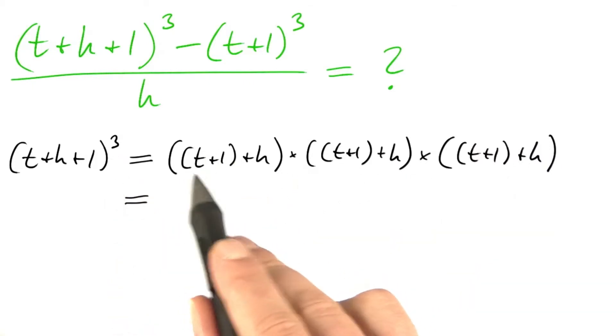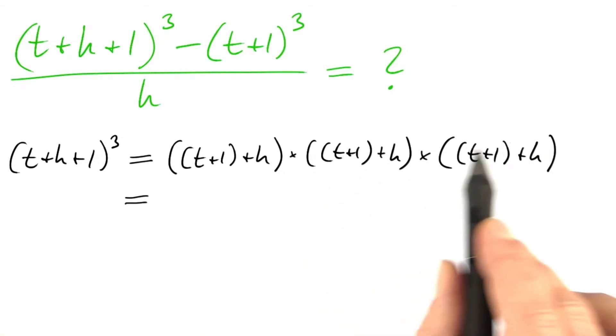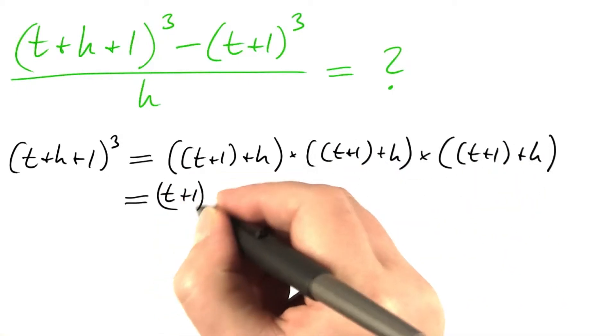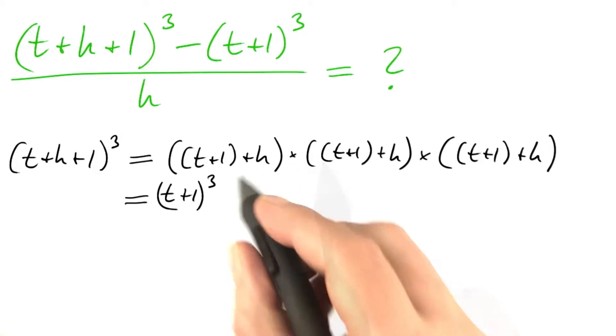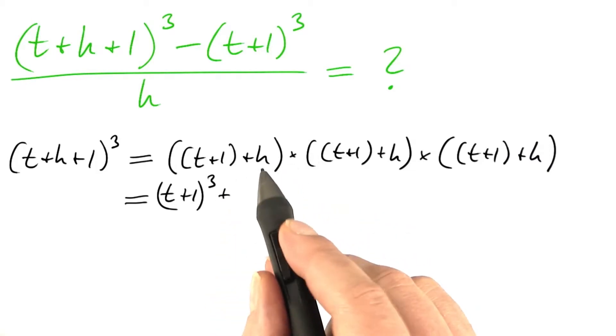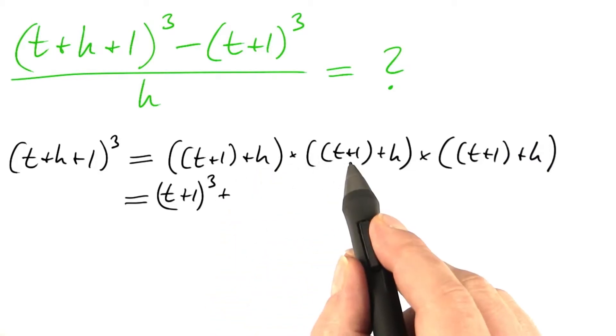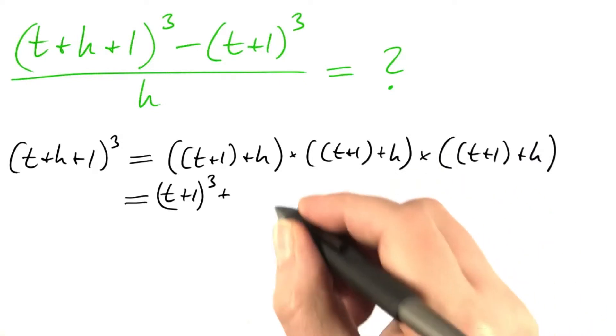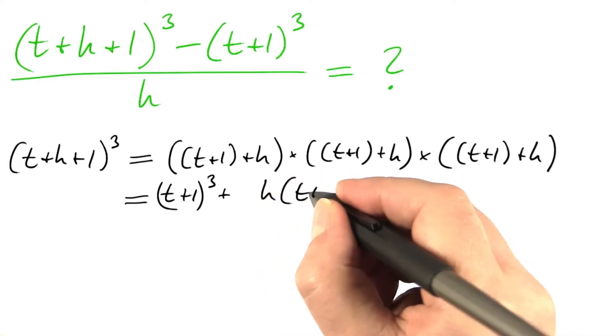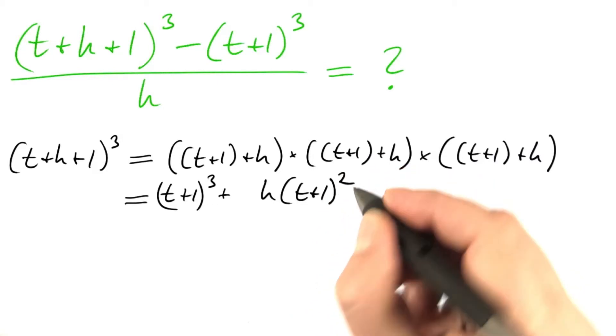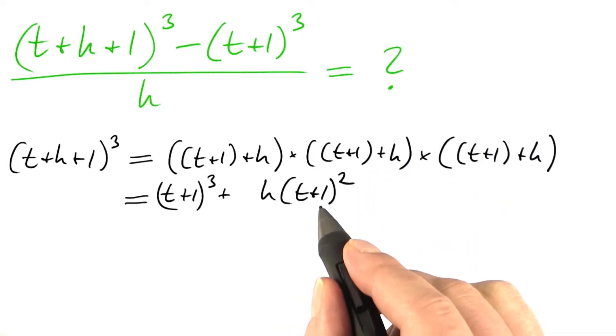What do I get? t plus 1 times t plus 1 times t plus 1 is t plus 1 to the third power. Then I get terms of that sort h times t plus 1 times t plus 1, which is of course the square of t plus 1.